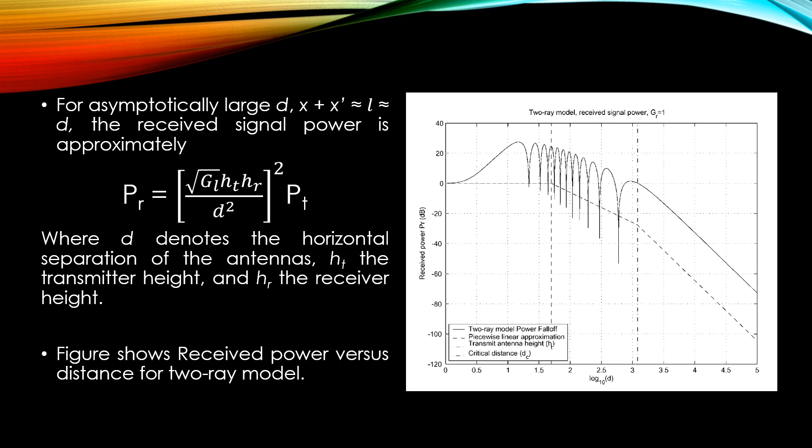This maxima and minima are also referred to as small-scale or multipath fading. At a critical distance dc, the final maximum is reached, after which the signal power falls off proportionally with d to the power of minus 4. This rapid fall-off distance is due to the fact that d greater than dc, the signal components only combine destructively and so are out of phase by at least π.